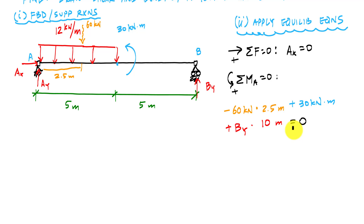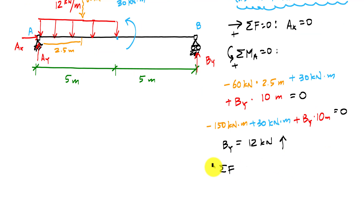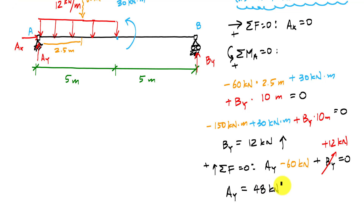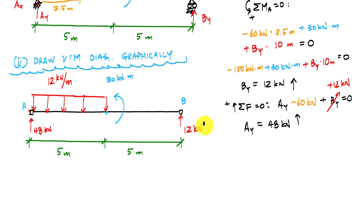When I solve this equation, I get BY equal to 12 kilonewtons pointing upward. Then from summing forces in the vertical, AY equals 48 kilonewtons — also pointing upward. After getting the support reactions, I draw another free body diagram of the structure with the unknowns filled in.